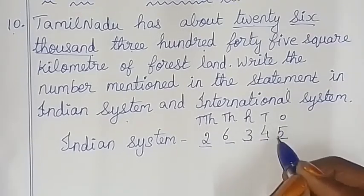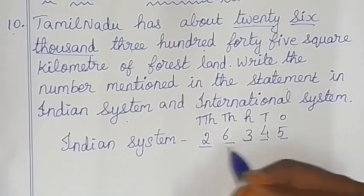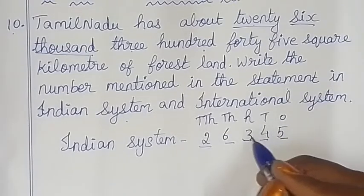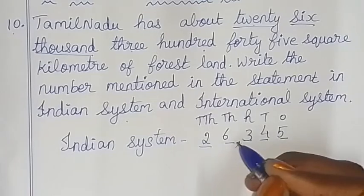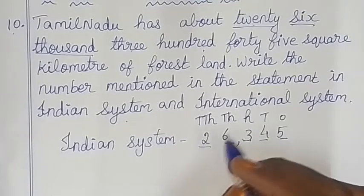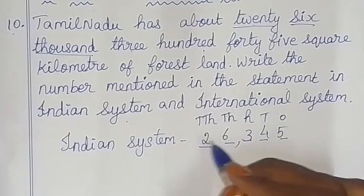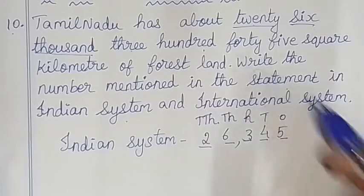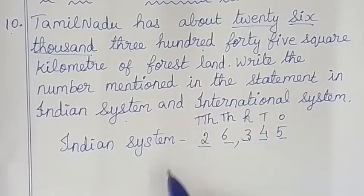Now we have to check the comma place — once, with the tens before a comma. So checking the comma placement: 26,345. That is how the number is written in the Indian system.